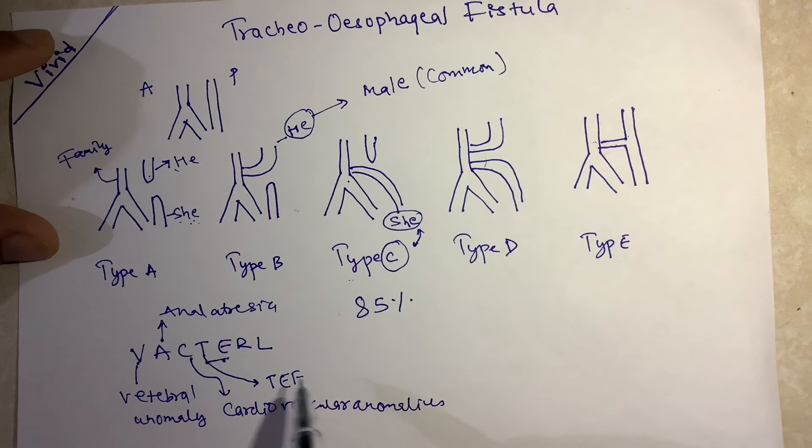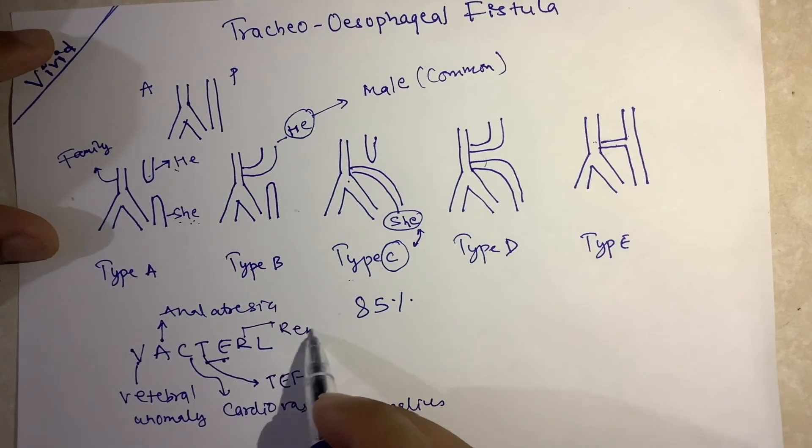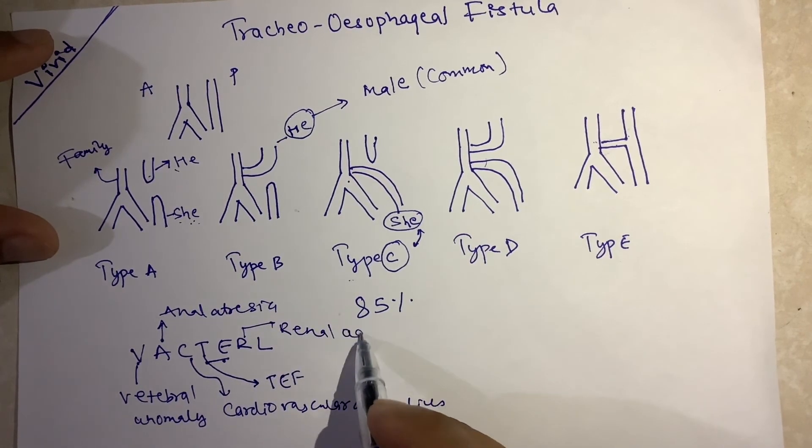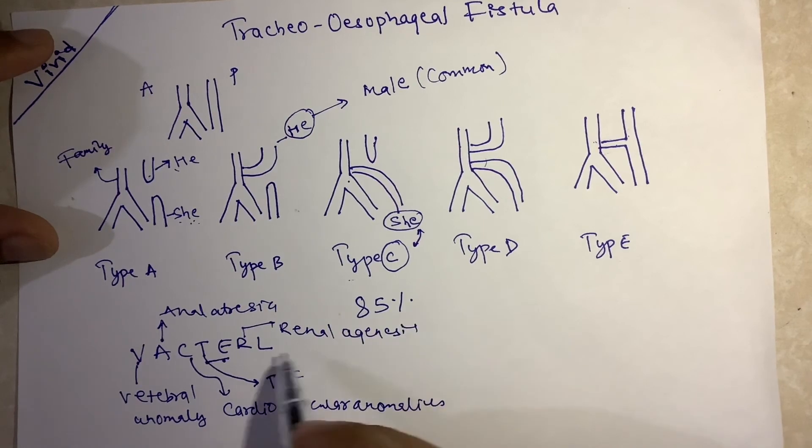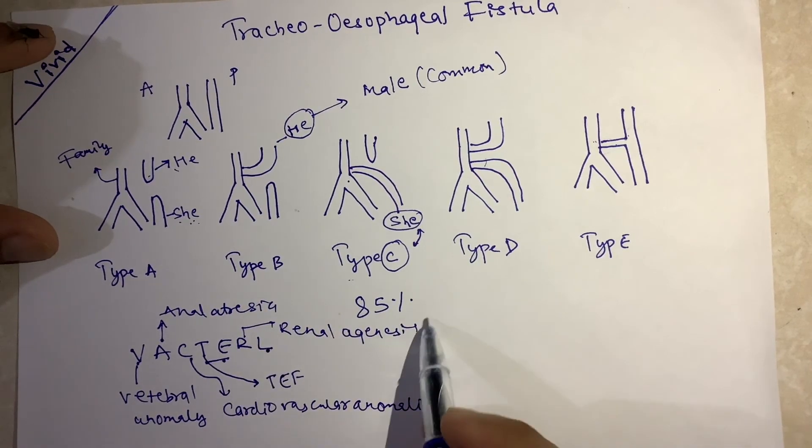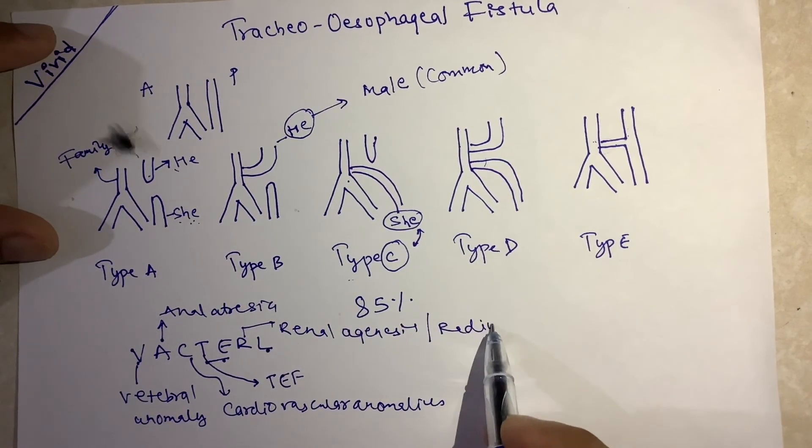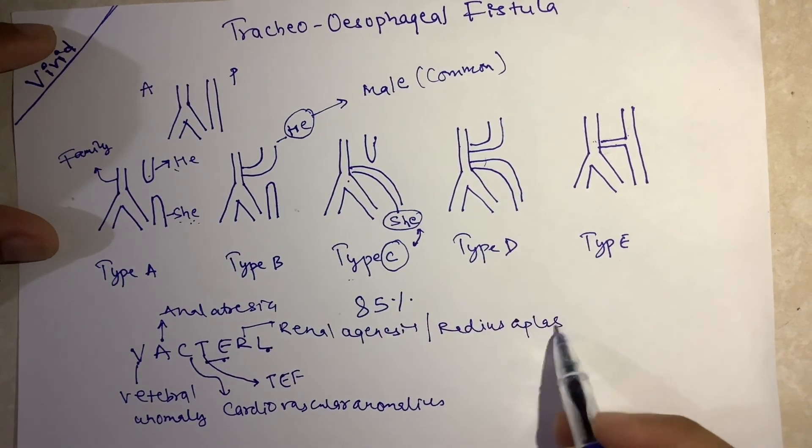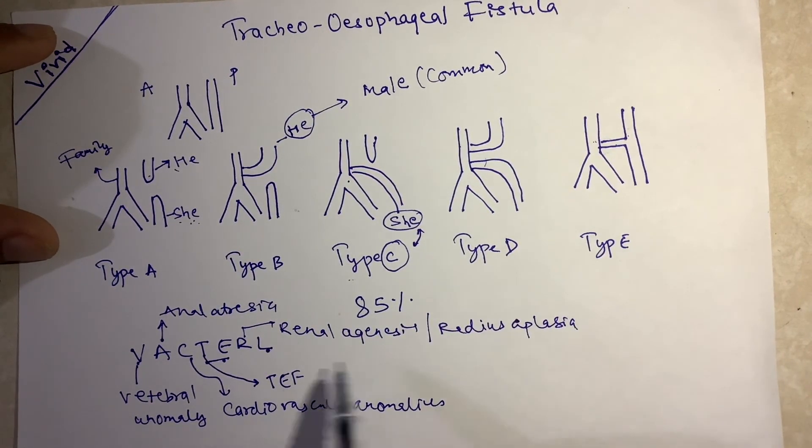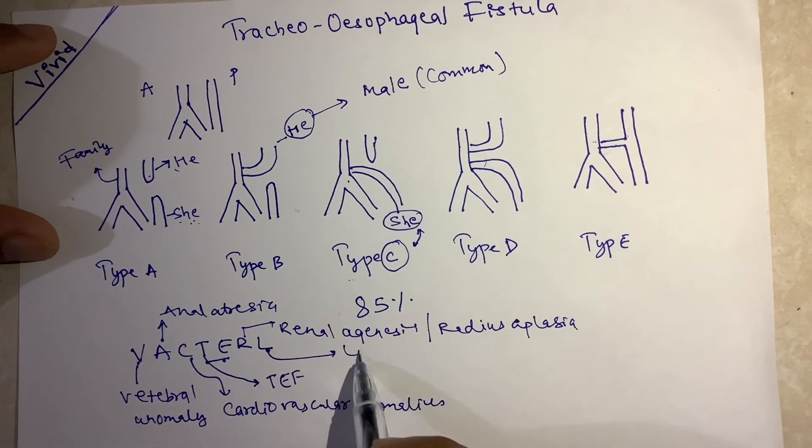Tracheoesophageal fistula, renal agenesis, and also radius aplasia, that is bone of forearm radius is aplastic, and limb defect.